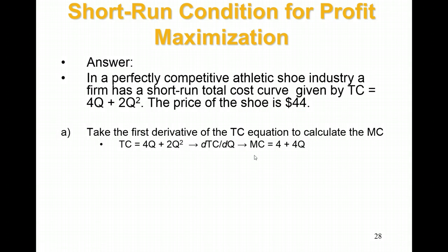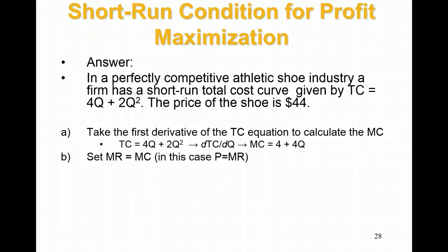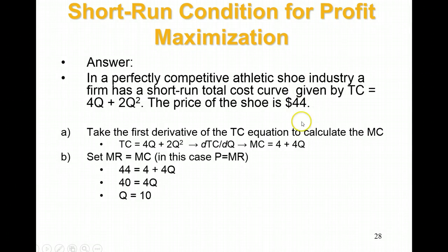Now that we have the marginal cost curve, we set marginal cost equal to marginal revenue to determine the output rate. We know marginal revenue because price and marginal revenue are equal in a perfectly competitive market structure. So we set them equal: 44 equals 4 plus 4Q. Collecting like terms, bring the 4 over to the left side and divide both sides by 4 — Q equals 10. So price is $44 and quantity is 10.